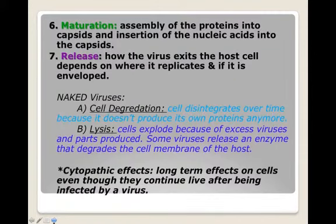Once replication is complete, we have lots of viral capsid proteins and lots of nucleic acids made. Then maturation occurs: the proteins are assembled into capsids, the nucleic acid gets put inside to become a nucleocapsid, and then we reach the final stage — release.